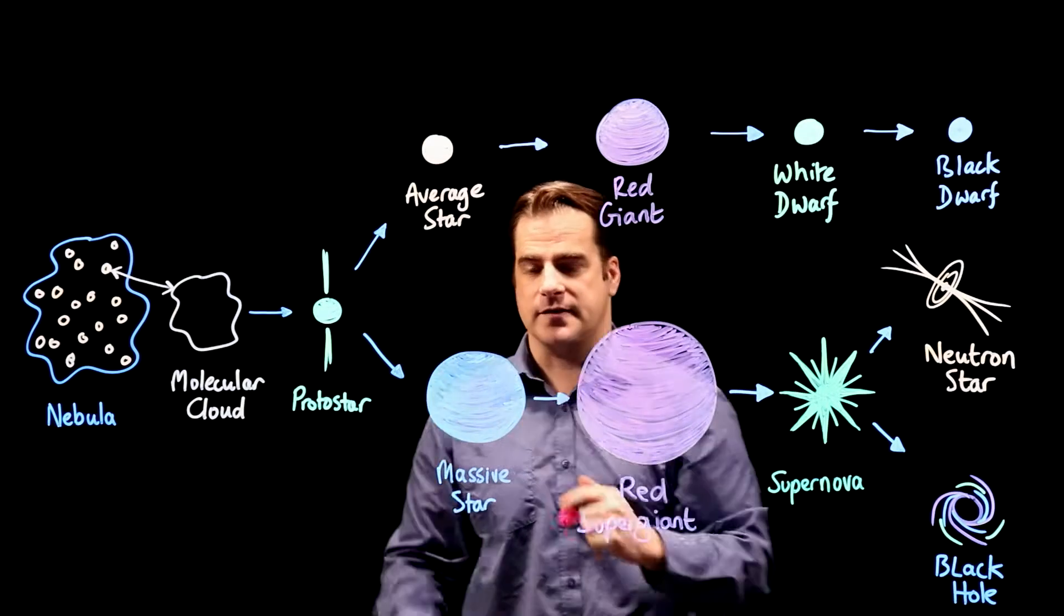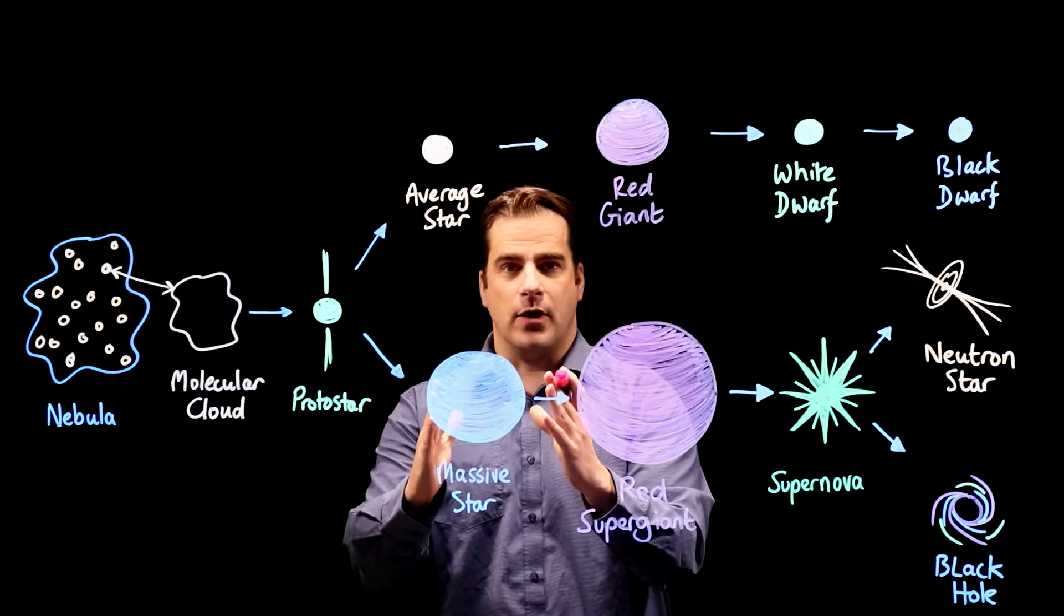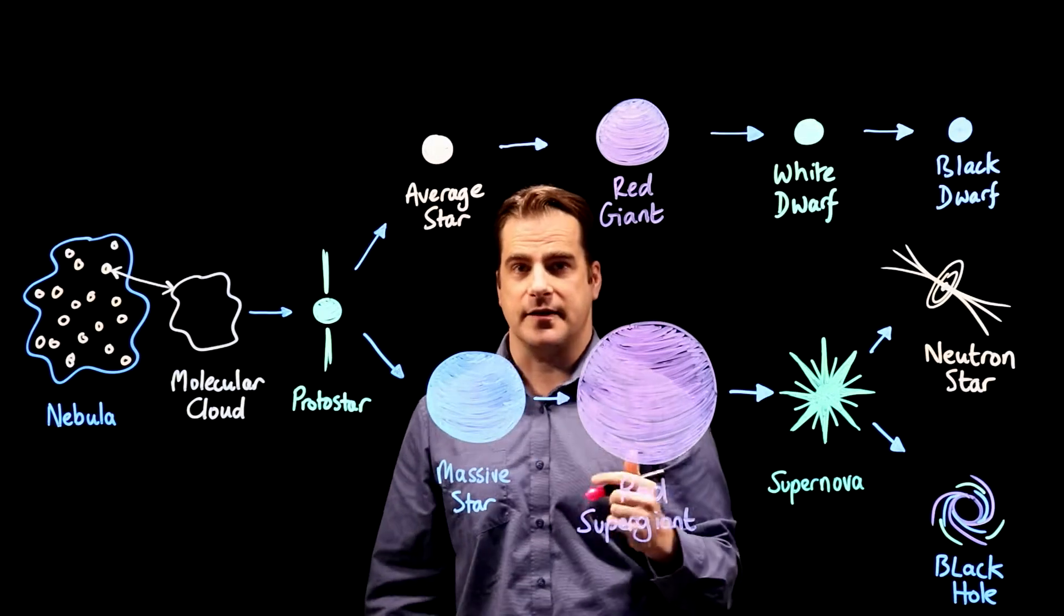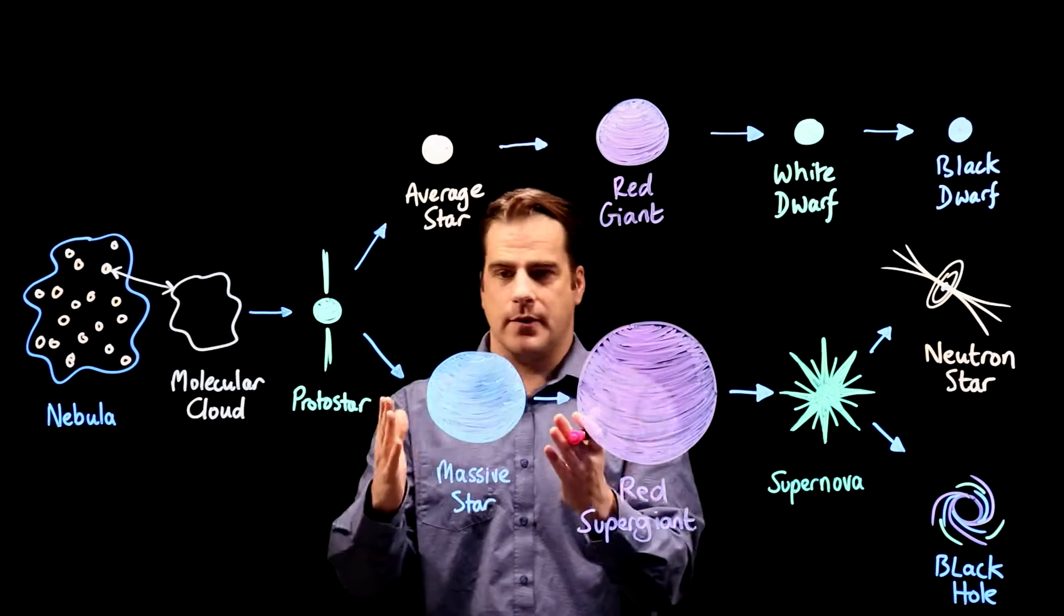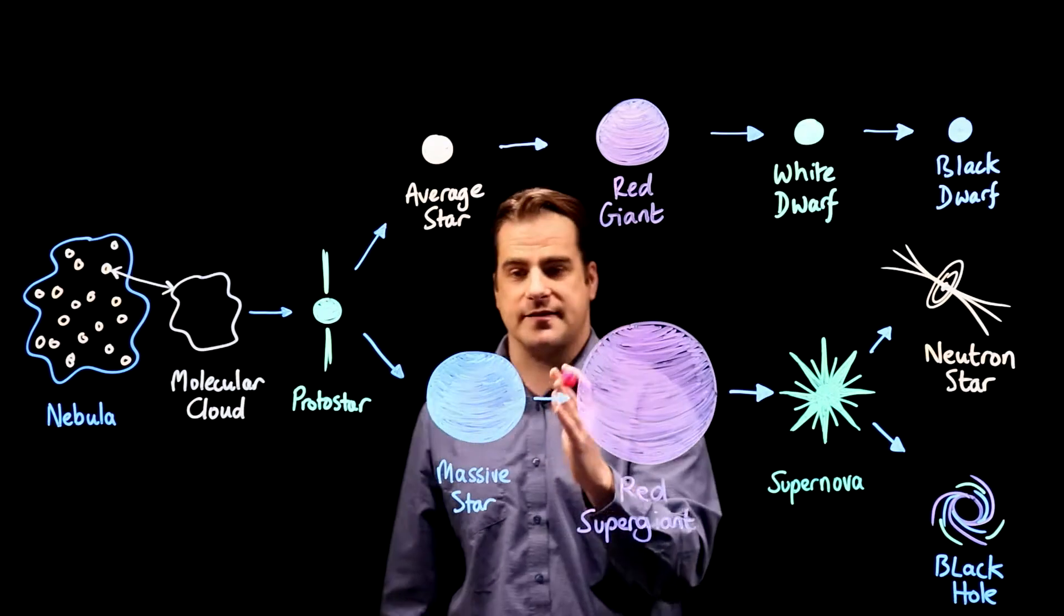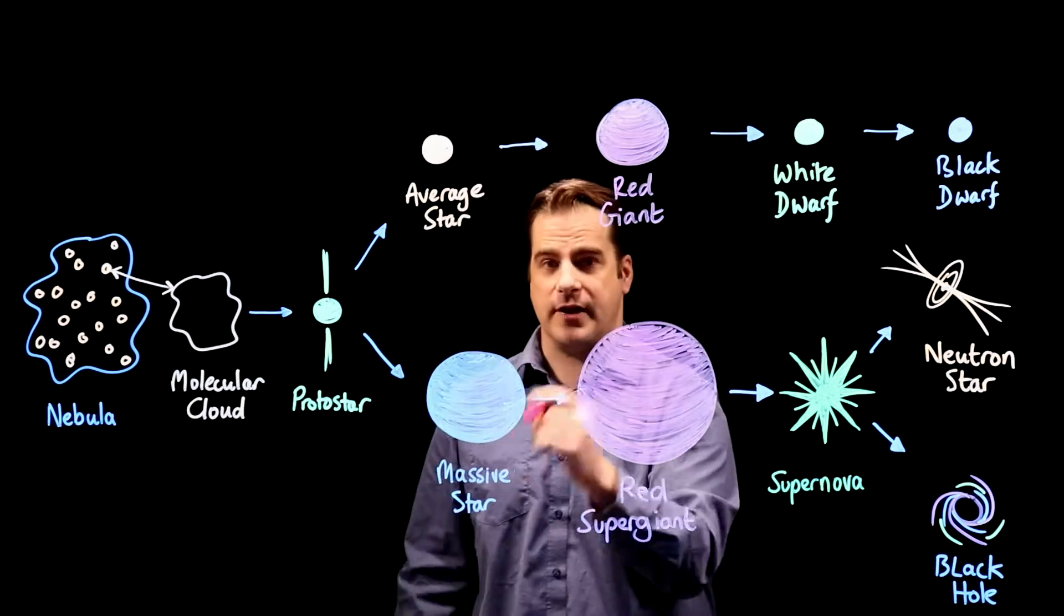A star much bigger than our Sun, a really big one, it could spend only as little as a million years in its main sequence but a typical time might be about 20 million years. So much less than our Sun, it gets through its material much faster.